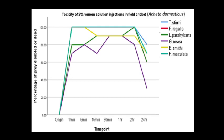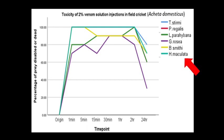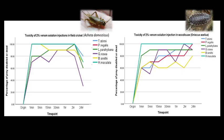Note that the following graphs I will be discussing show the percentage of prey disabled or dead on the y-axis, with 0 meaning no disabled or dead specimens and 100 meaning all disabled or dead. The time points that deaths were recorded are on the x-axis, and each tarantula species venom has a colour associated with it for viewing purposes. The two graphs shown here are the 2% venom concentration ones: crickets on the left, woodlice on the right.